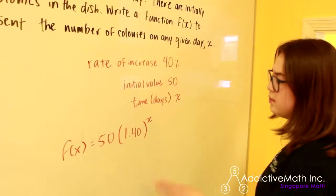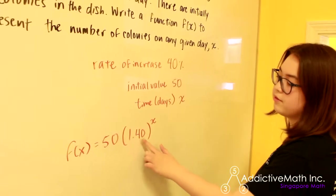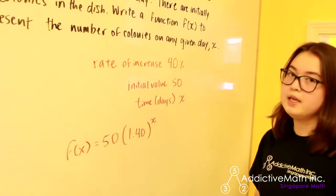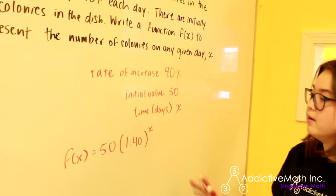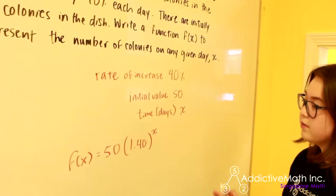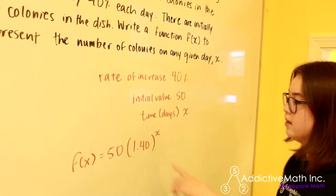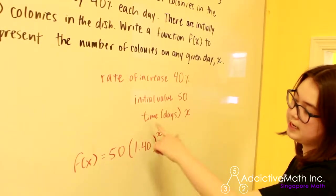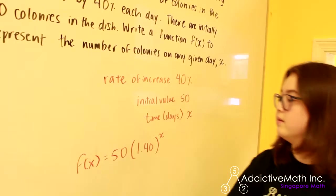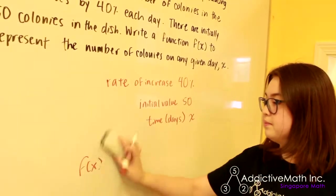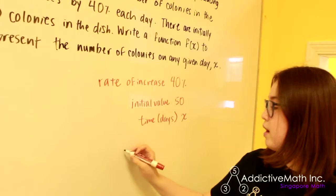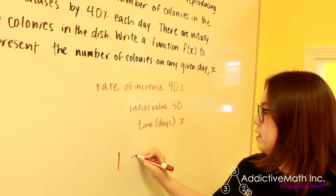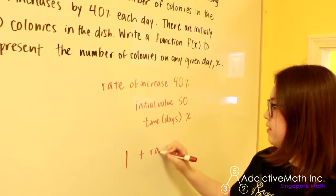Now, the reason that we're using 1.4 and not just 0.4 is because of how we portray growth and decay with exponential functions. Whenever you have an exponential function, this thing in here is the rate. If it is a growth function, if we have a function that's growing, then we would describe the rate as being 1 plus the rate of increase.